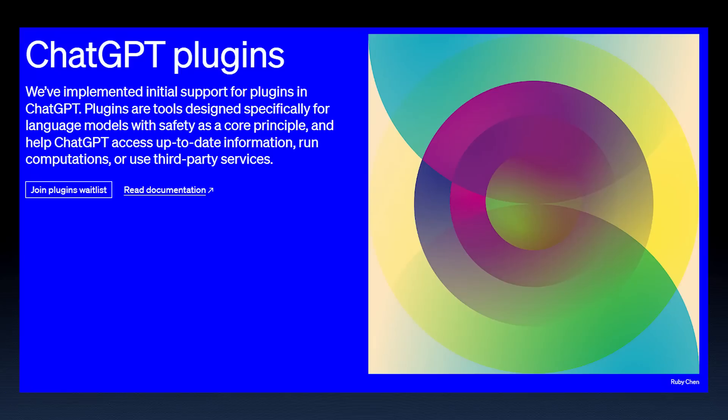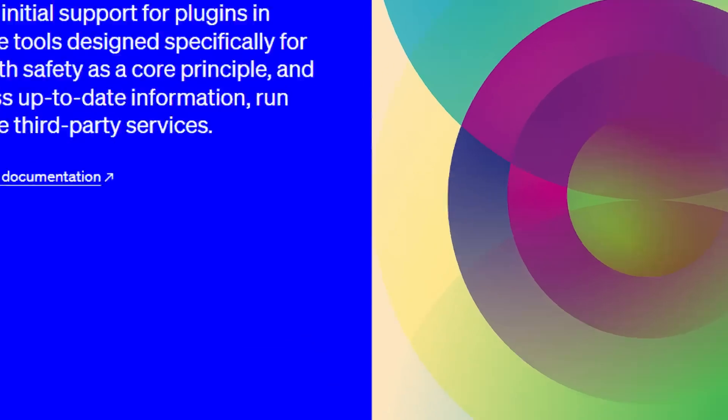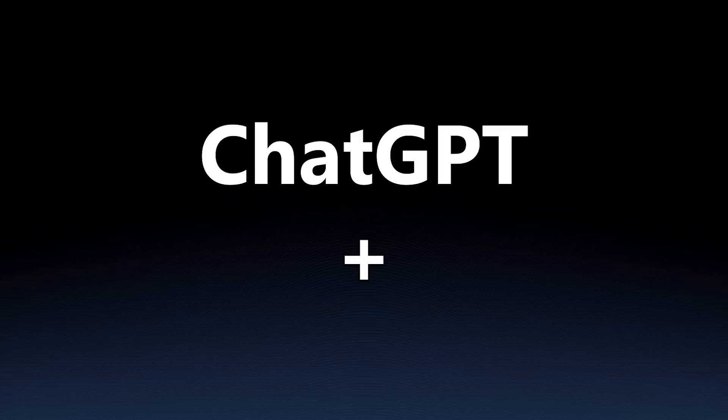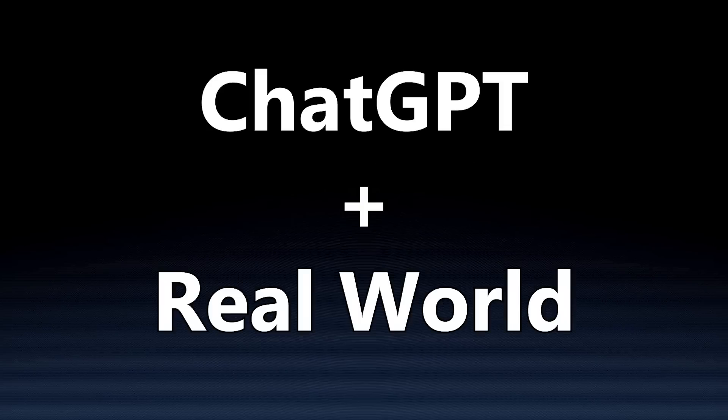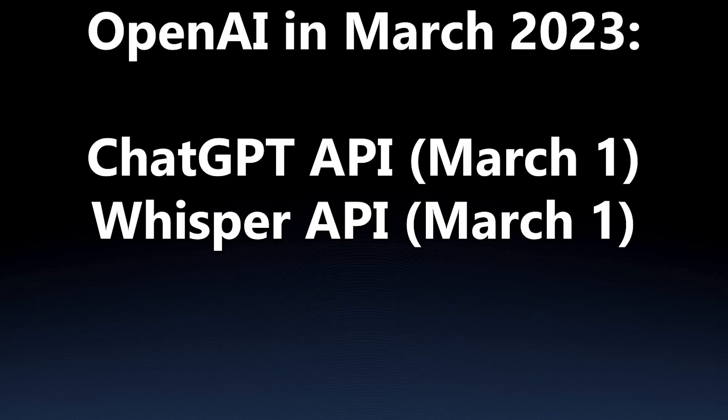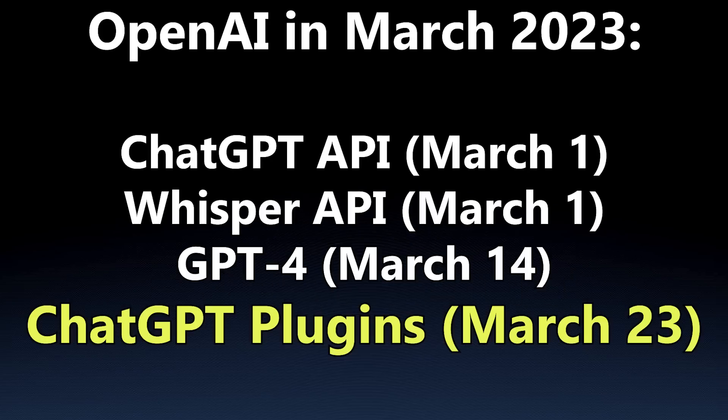OpenAI just announced ChatGPT plugins, a way for ChatGPT to interact with the real world. This is the fourth release OpenAI has had this month alone, and it is huge.